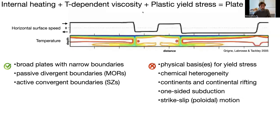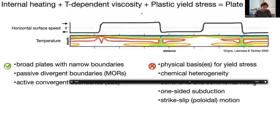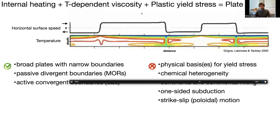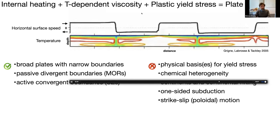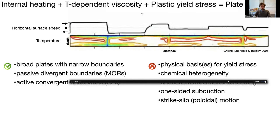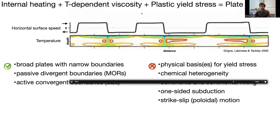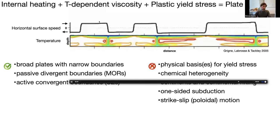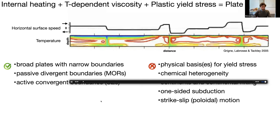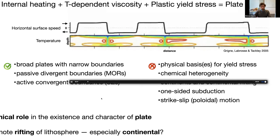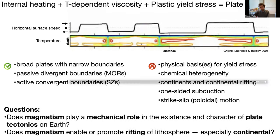What does this simulation get right? Well, it shows that you can produce broad plates with narrow boundaries between them. It produces passive divergent plate boundaries known as mid-ocean ridges, and it produces active convergent plate boundaries, which are like subduction zones.